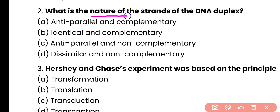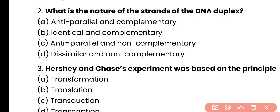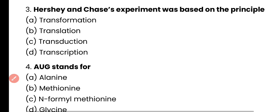Question number 2. What is the nature of strands of DNA duplex: anti-parallel and complementary, identical and complementary, anti-parallel and non-complementary, or dissimilar and non-complementary? Correct answer is option A. Both strands of DNA duplex are complementary due to specific base pairing and they run in opposite directions — one strand runs 5' to 3' and the other 3' to 5' — so both strands are anti-parallel as well.